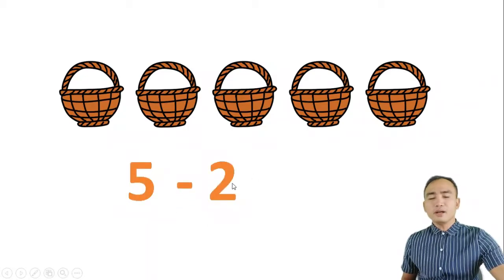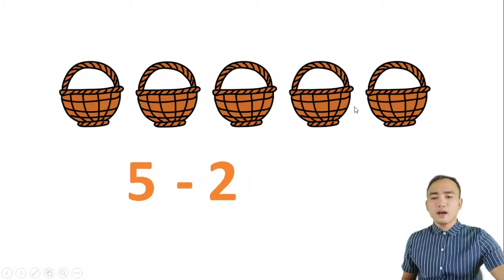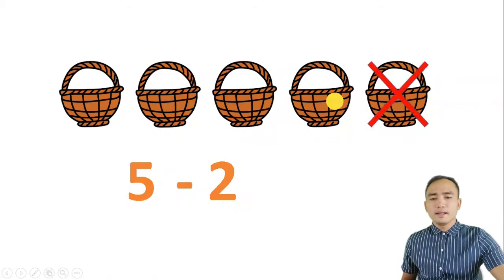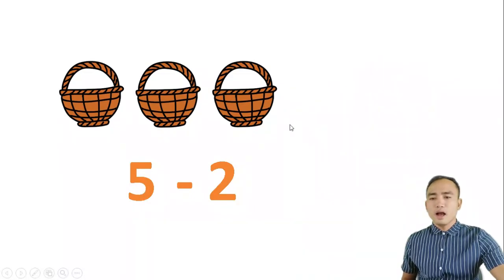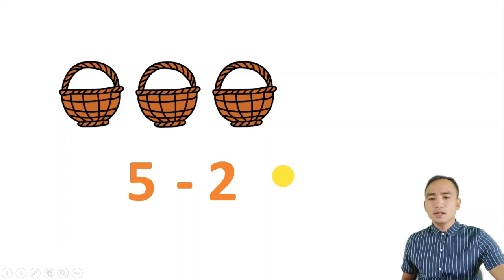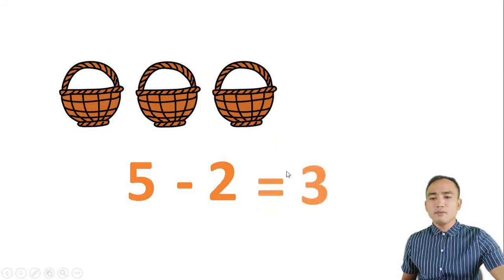If we are going to take away 2 baskets — 1, 2 — how many baskets were left? 1, 2, 3. Therefore, 3 baskets were left.